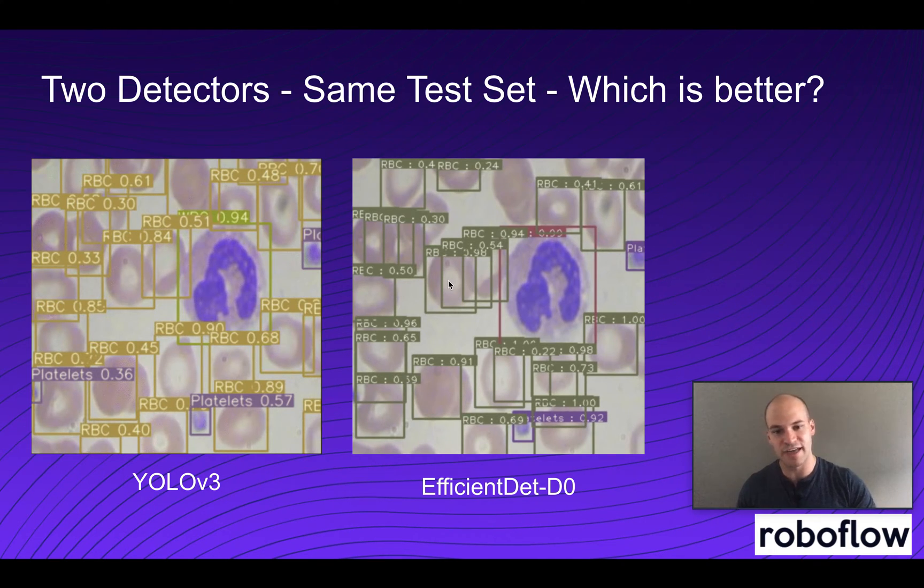They're both doing a pretty good job identifying red blood cells and white blood cells. But here you can see EfficientDet is making maybe a few too many predictions. It has a red blood cell box in the middle of two red blood cells and looks like it's doing that up here too. So maybe from this point of view, we would want to pick YOLO v3 and say that's just a better model.